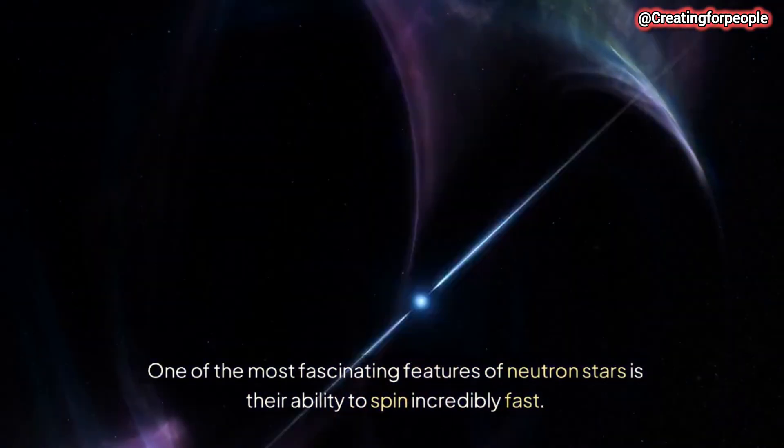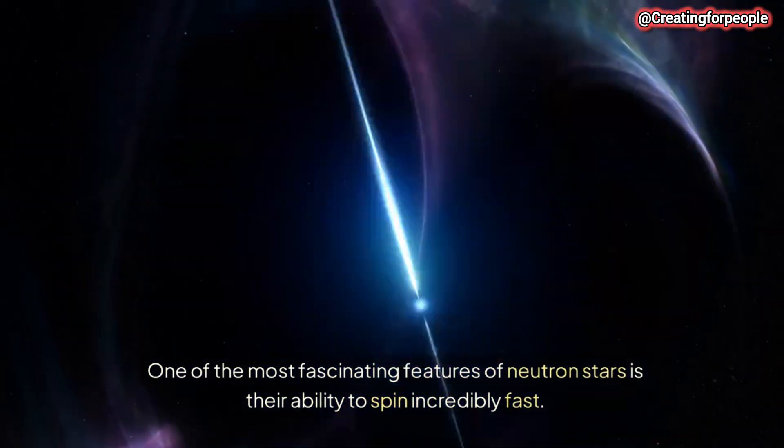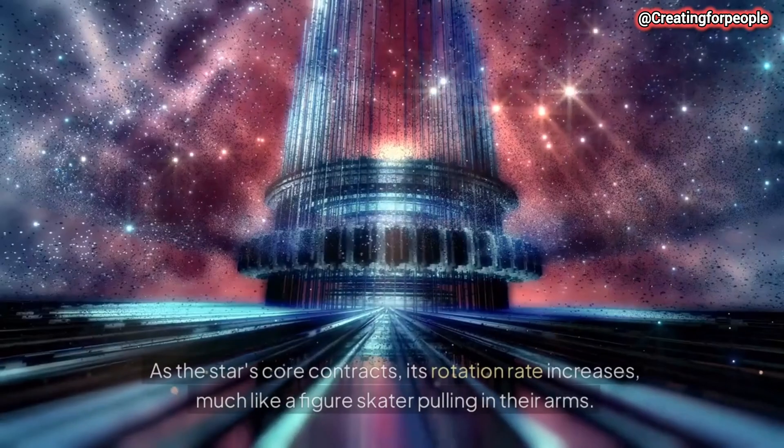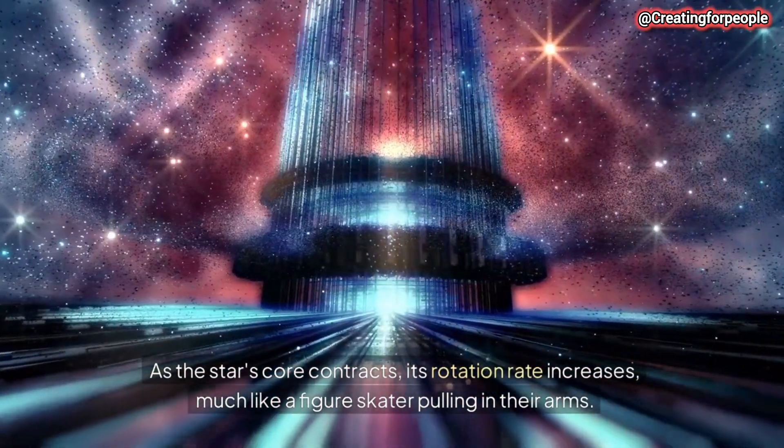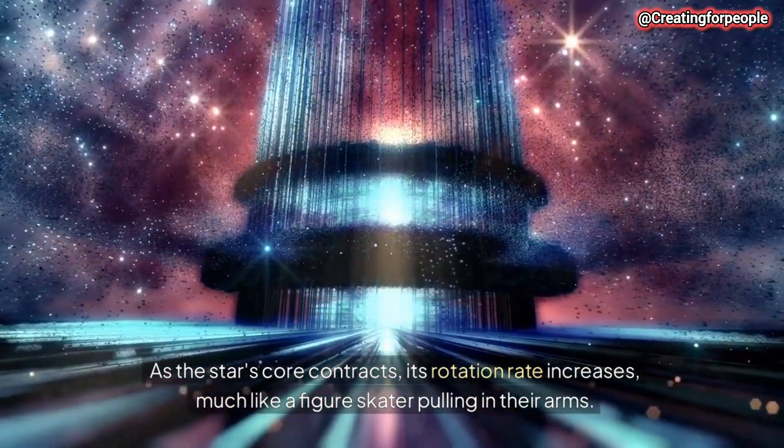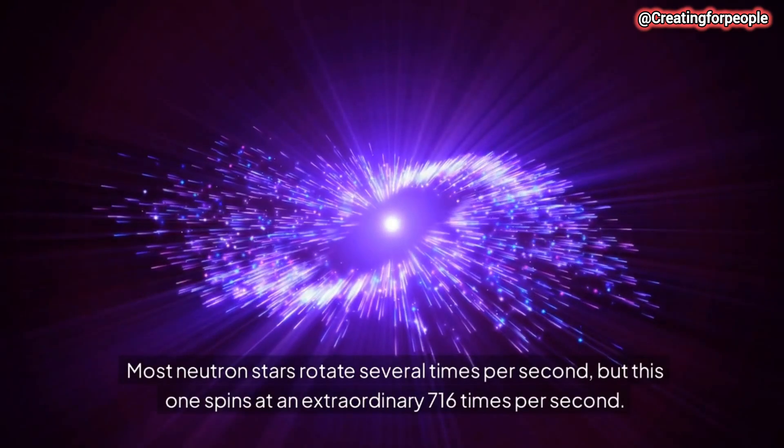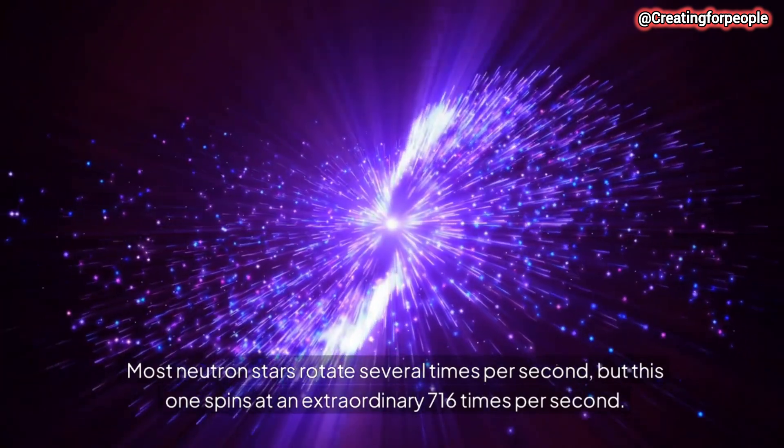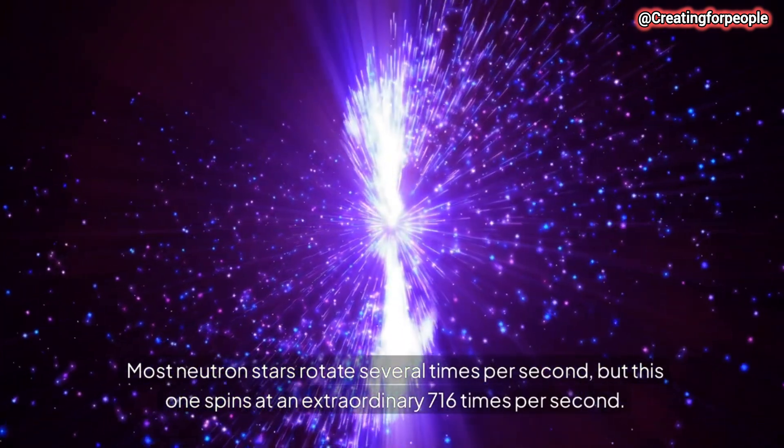One of the most fascinating features of neutron stars is their ability to spin incredibly fast. As the star's core contracts, its rotation rate increases, much like a figure skater pulling in their arms. Most neutron stars rotate several times per second, but this one spins at an extraordinary 716 times per second.